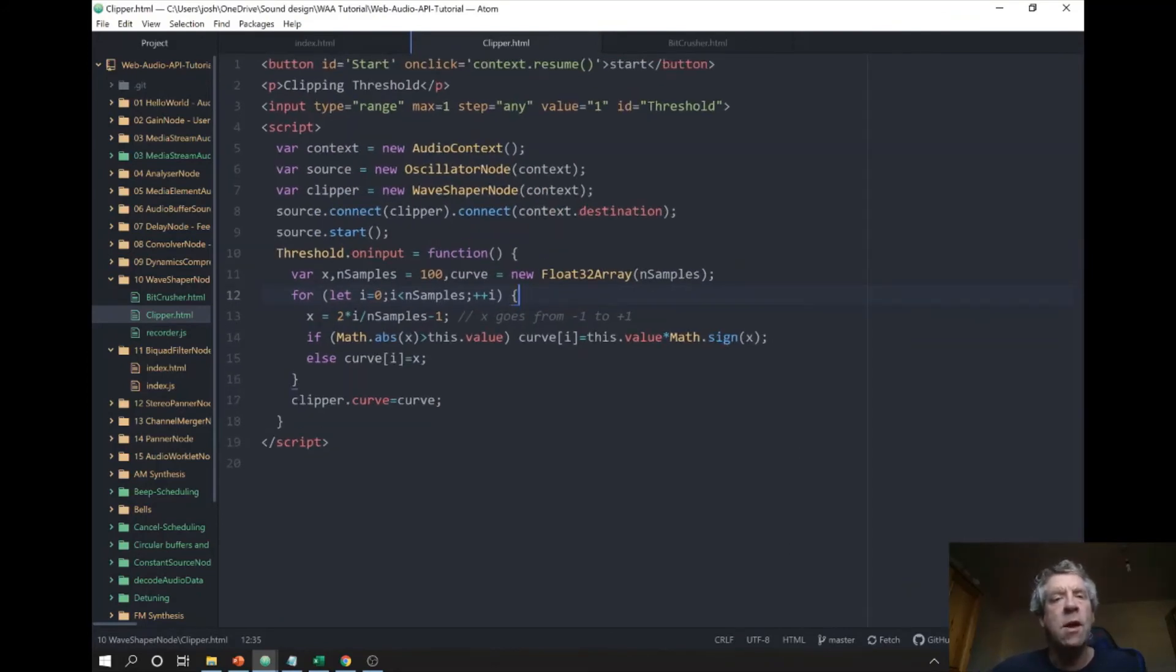So we create a button just to start the audio context if it is not already started. And we set some threshold for clipping between -1 and +1. We define a source, which is going to be just an oscillator, pure sine wave, and a WaveShaperNode for clipping. And we connect the source to the clipper and to the output.